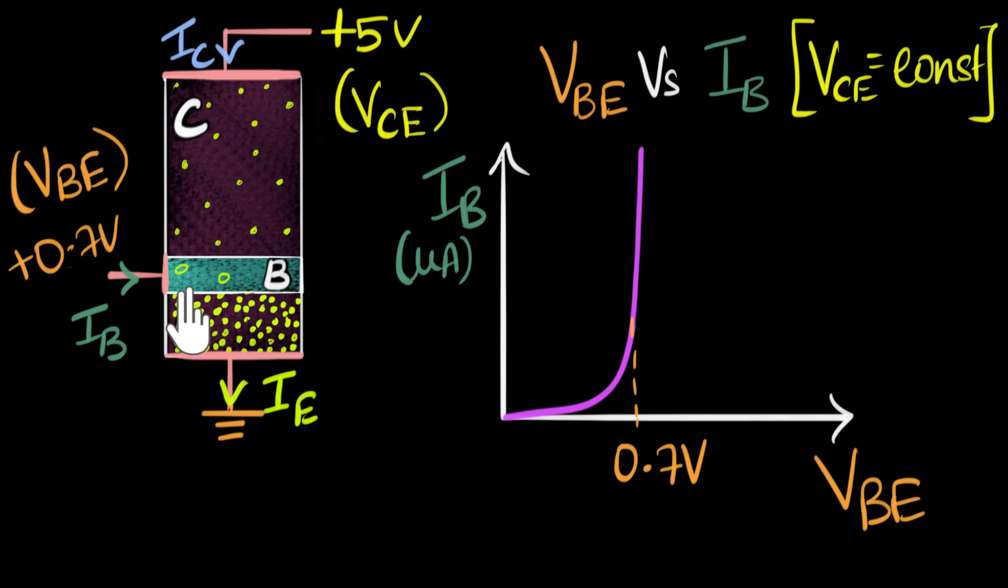And the reason for that is because there are very low amount of recombination happening in the base, and so very less number of electrons will be pulled out from over here. But anyways, this is what the graph looks like. Now this is the graph at which we kept the VCE value about five volt for the entire experiment.